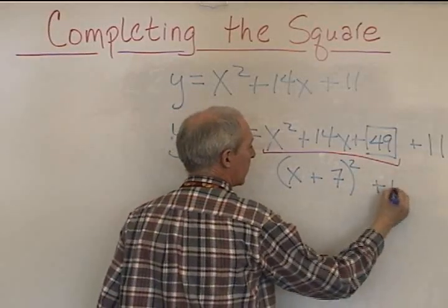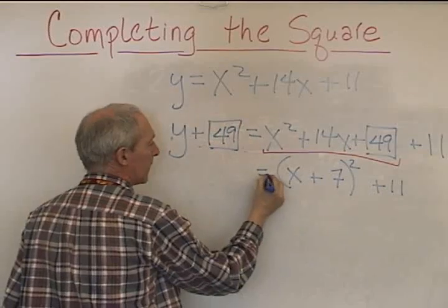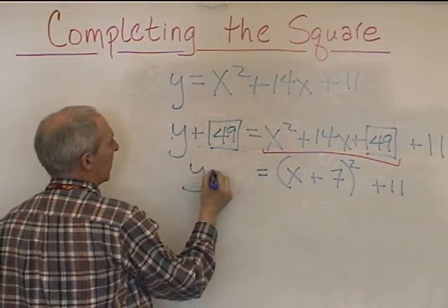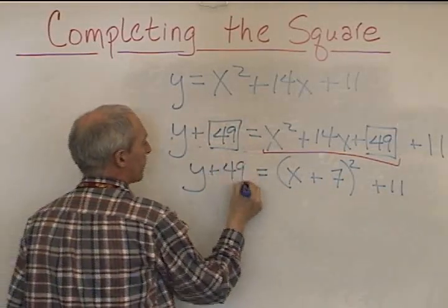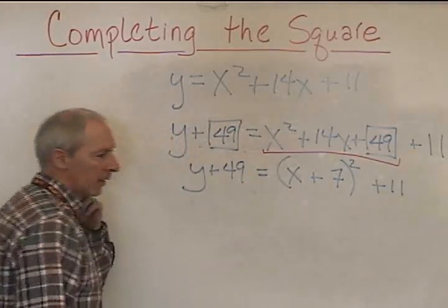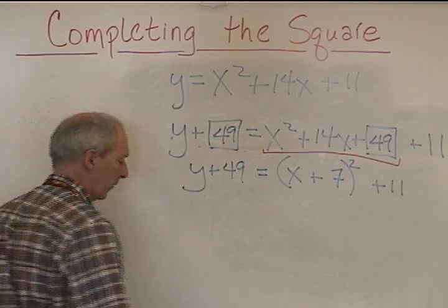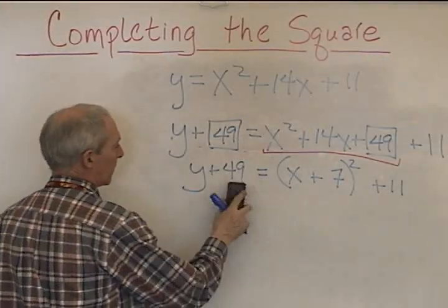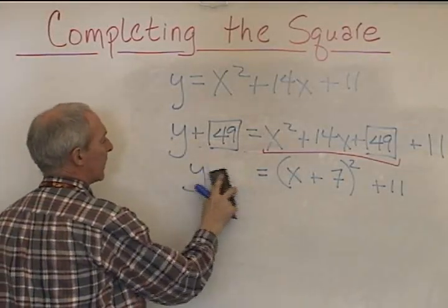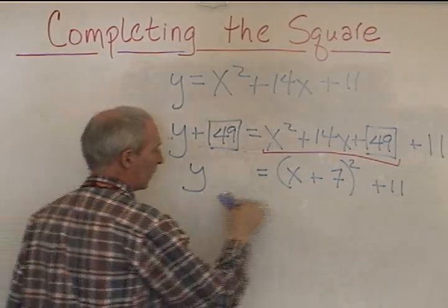We bring down the positive 11 here. y plus 49 equals this. Now, what do we want to do? Isolate the y, so we'll subtract 49 from both sides. Subtracting 49 from here makes it go away. y equals all this.